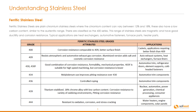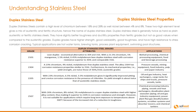Duplex stainless steels contain a high level of chromium between 18 and 28%, as well as nickel between 4% and 8%. These two high element levels give a mix of austenitic and ferritic structure — hence the name duplex stainless steel. Duplex stainless steel is generally twice as hard as plain austenitic or ferritic stainless steels.